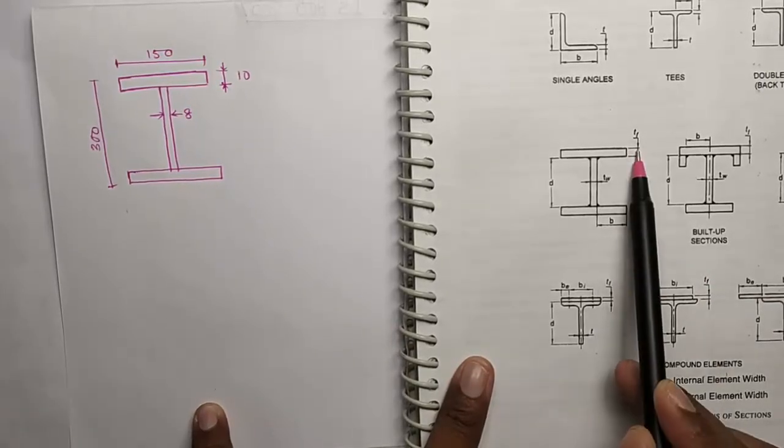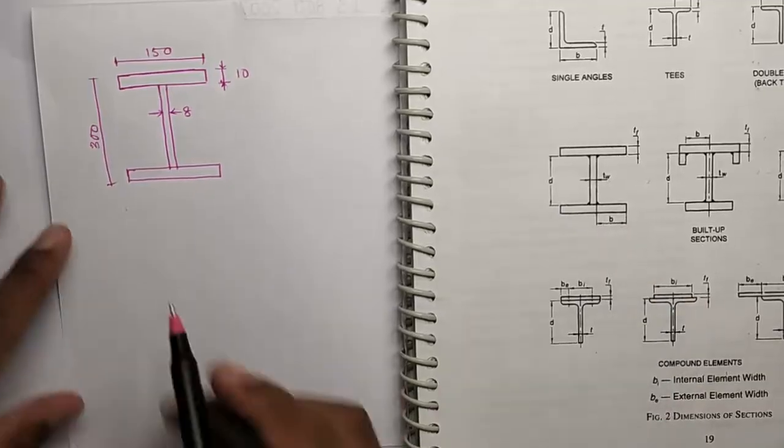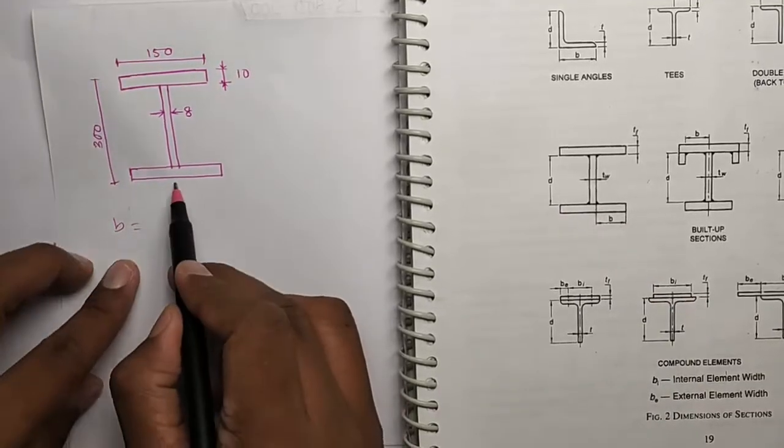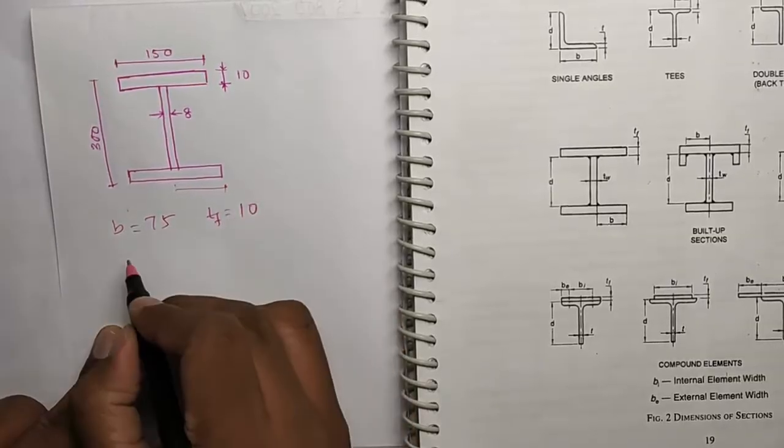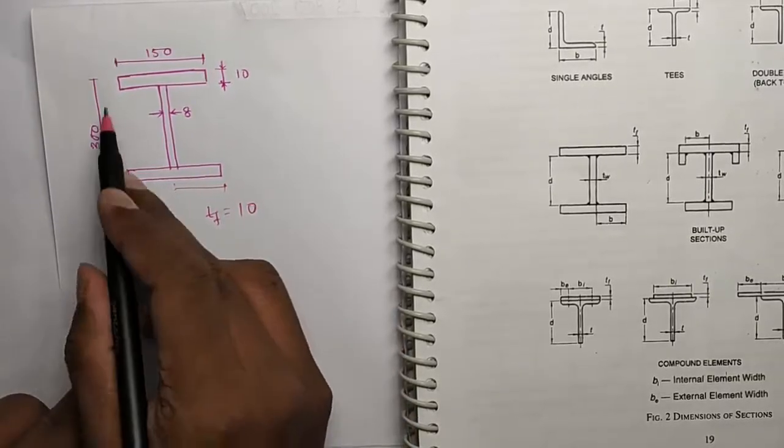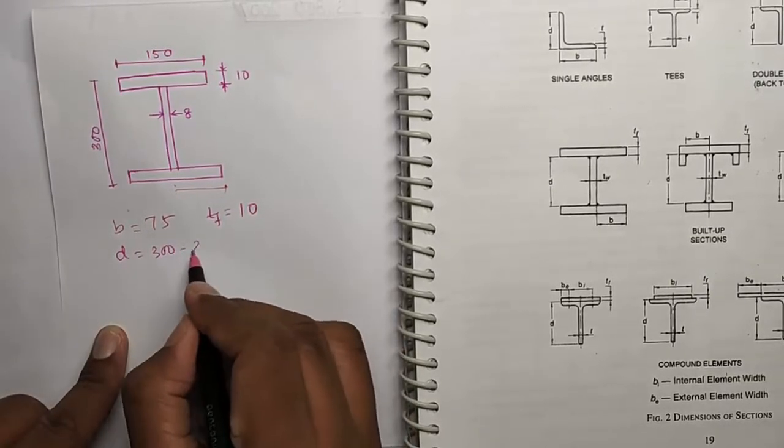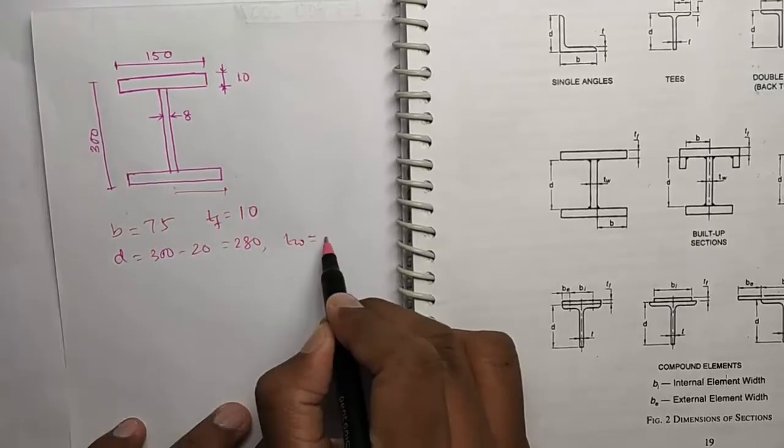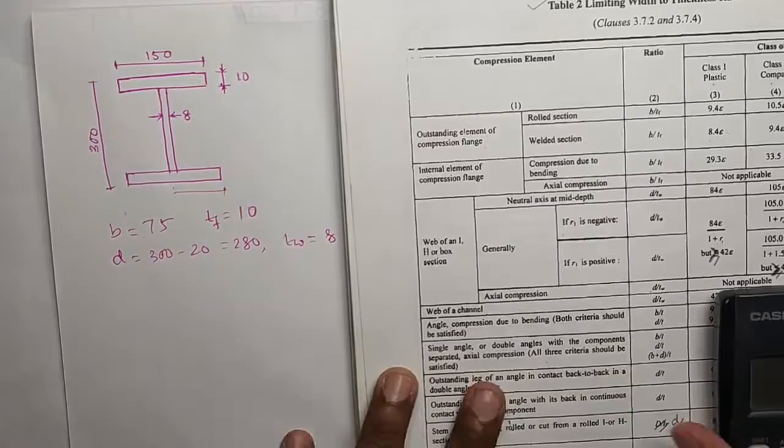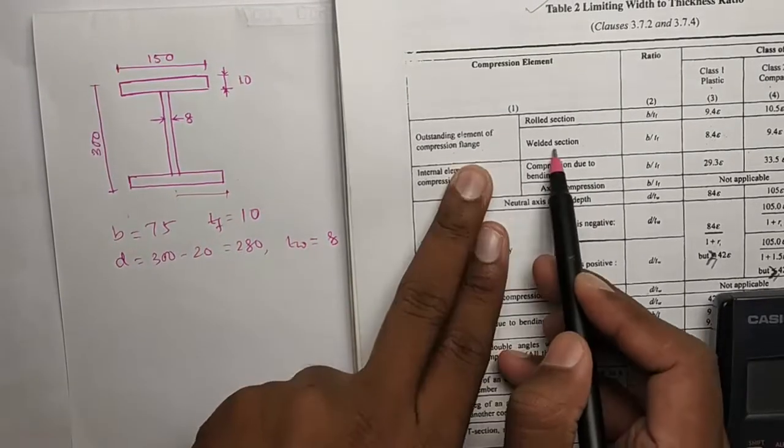B is this, TF, TW, and D. So B in our case will be this length 75. TF is 10, and TW is 8. Now go to table 2.